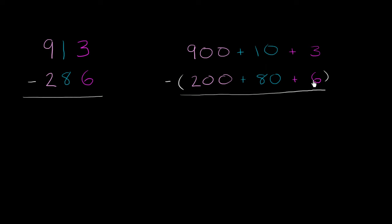So let's try to subtract going place by place. So if we start in the 1's place, we have a problem immediately. 3 is less than 6. How do we subtract a larger number from a smaller number?